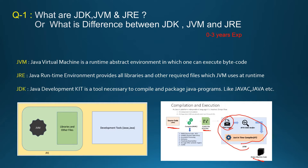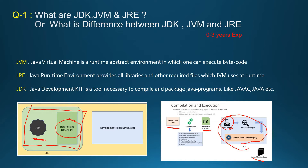So then what is JRE? JVM, as you can see in this picture, needs some libraries and other files in order to execute our bytecode. These libraries and other files utilized along with JVM — we call this bundle JRE, Java Runtime Environment. So Java Runtime Environment provides all the libraries and other required files which JVM uses, and collectively they are called JRE.